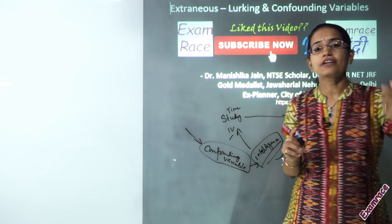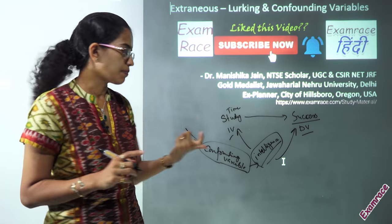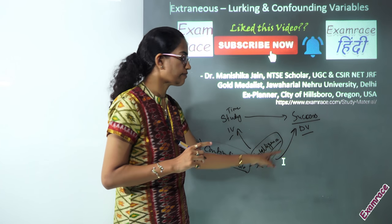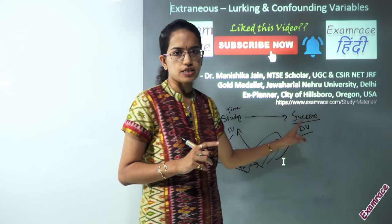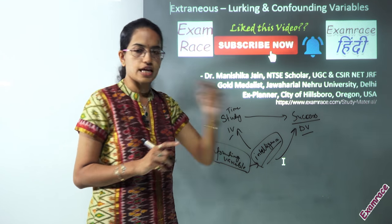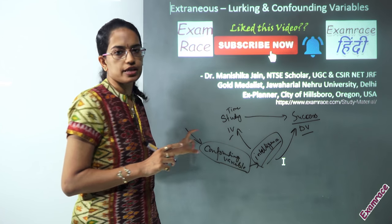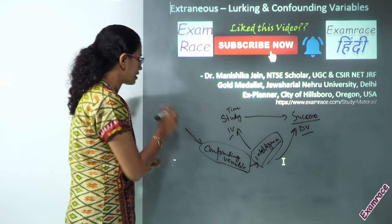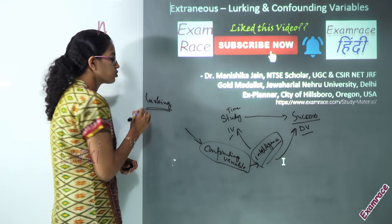Confounding variables try to provide an alternative explanation to your hypothesis. If I had not included intelligence, it would have provided an alternative explanation to my hypothesis. Therefore, controlling confounding variables is very important for research.